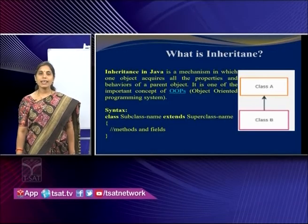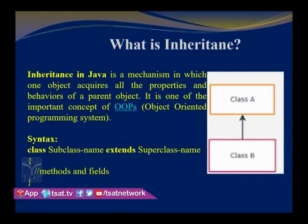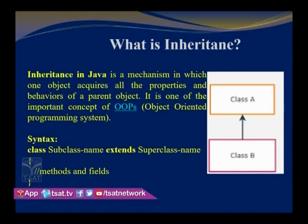Technically, inheritance in Java is a mechanism in which one object acquires the properties of another object. It is one of the important object-oriented programming concepts. We have two classes, class A and class B. Class B is inheriting the properties of class A. We call class A the parent class or superclass, and class B the subclass or child class. The syntax is: class SubclassName extends SuperclassName.